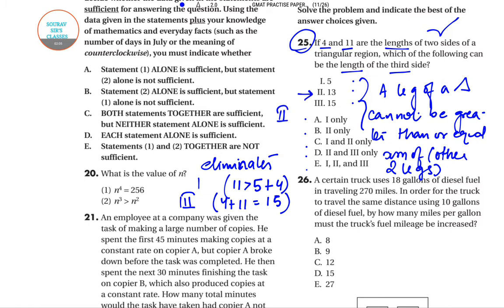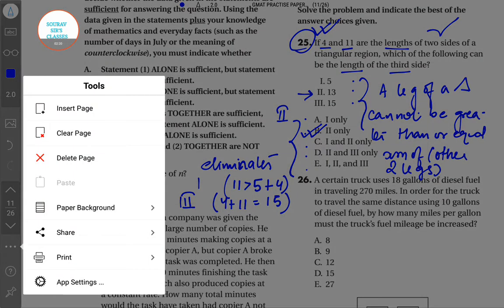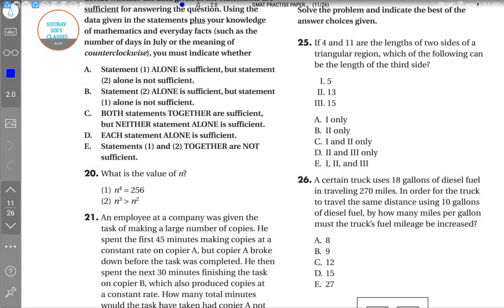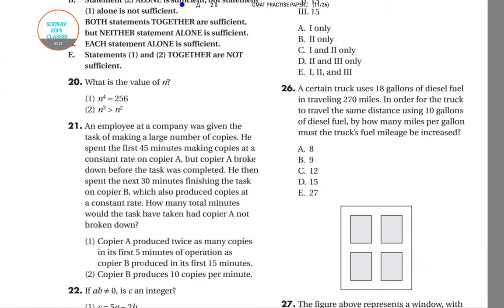However, we can't pick 2 directly; we have to pick from the given options. Since we know that 2 is only correct, option B will be the correct answer. Now we will move on to question number 26.